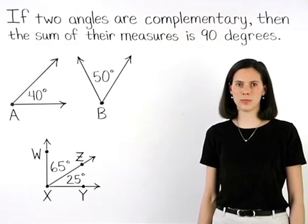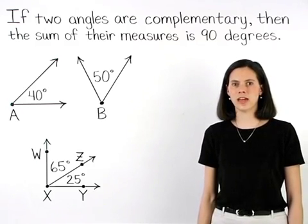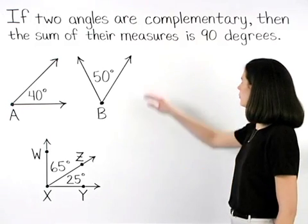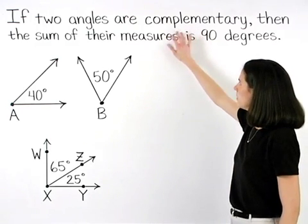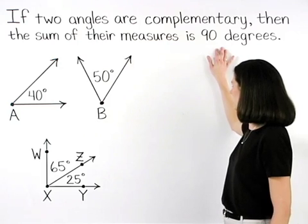The definition of complementary angles states that if two angles are complementary, then the sum of their measures is 90 degrees.